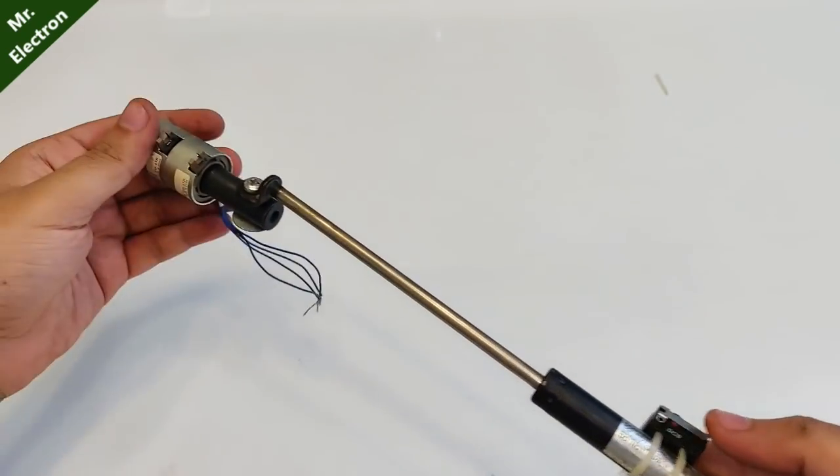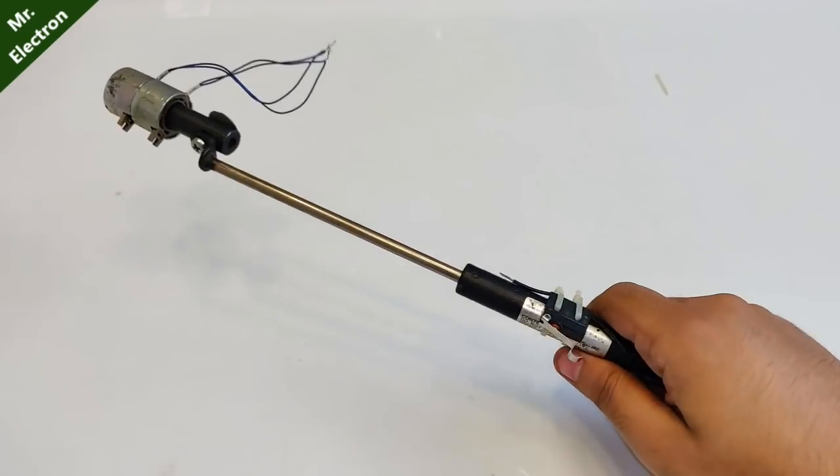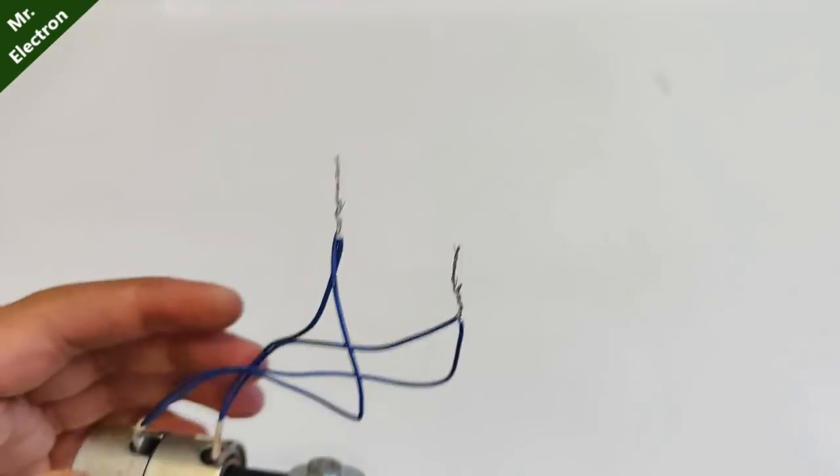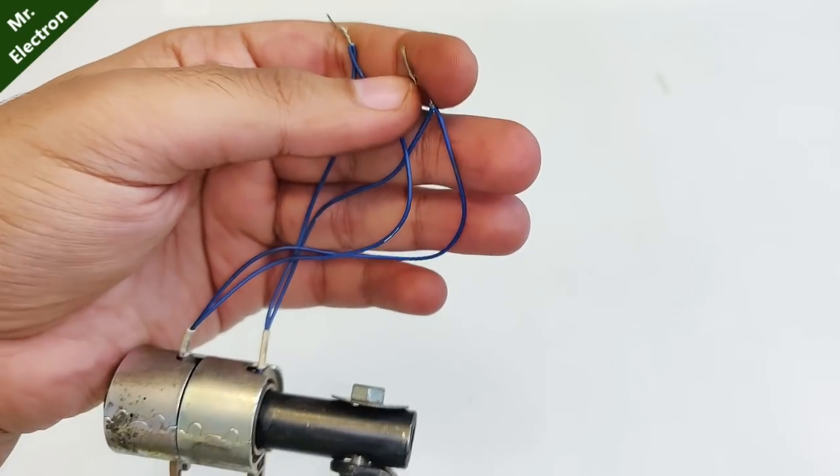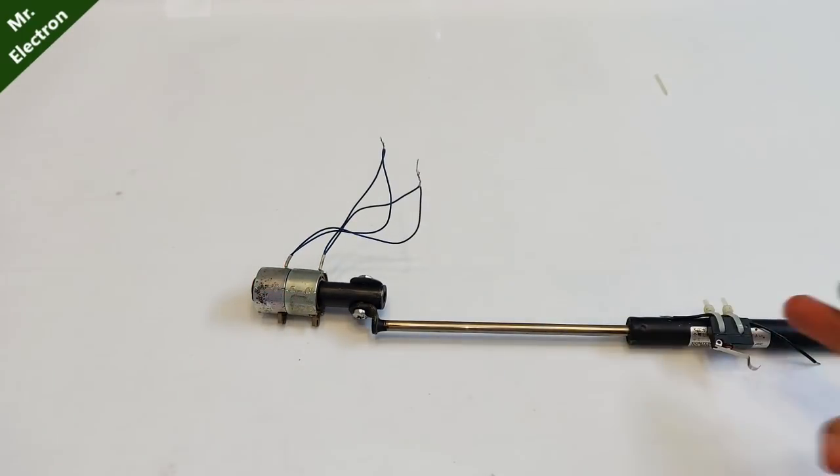As you can see that I have connected the two solenoids in parallel, okay, so that they can draw more current at lesser voltage input. So now comes the wiring.